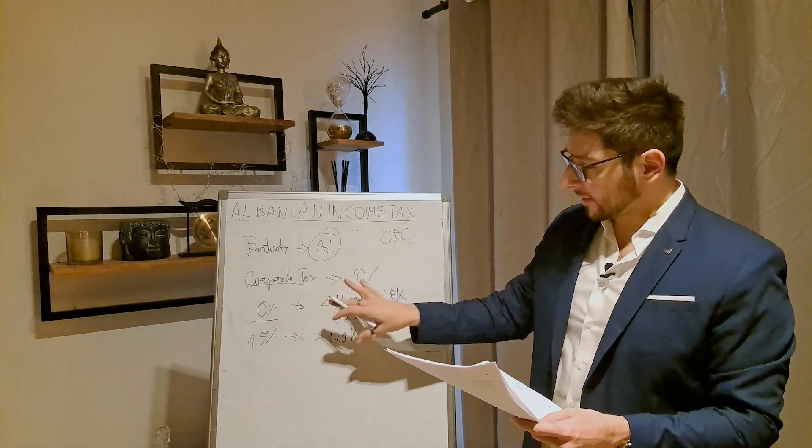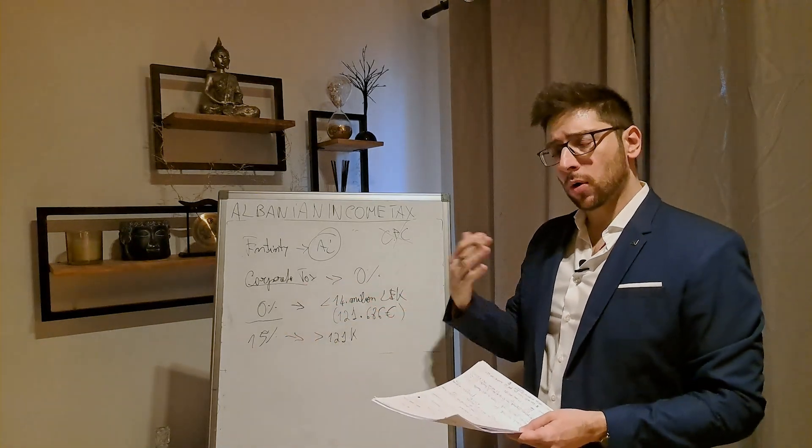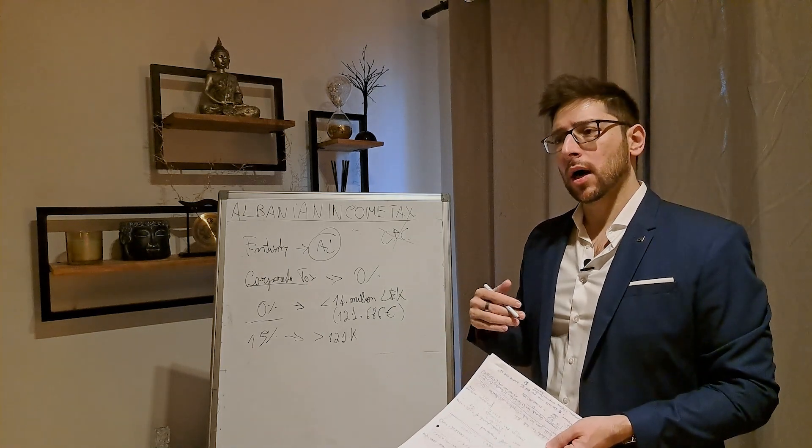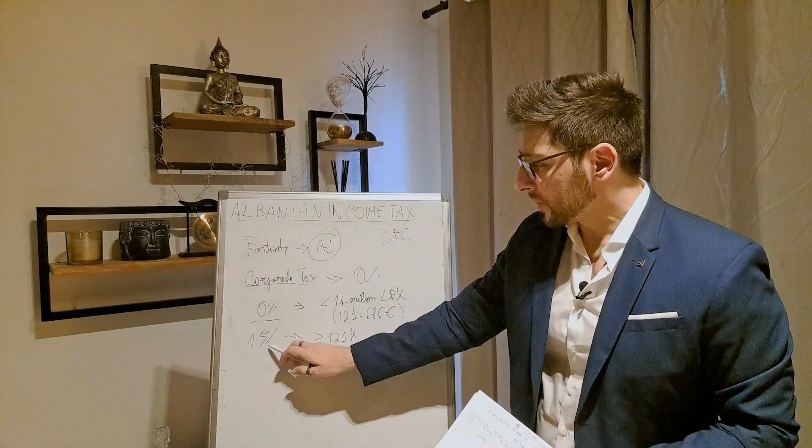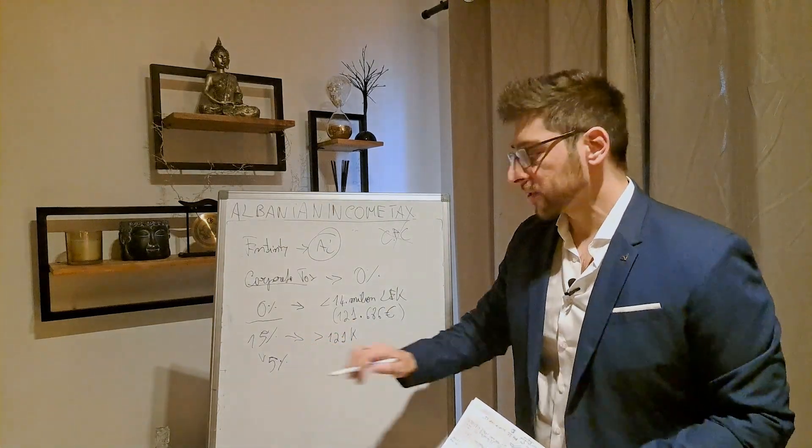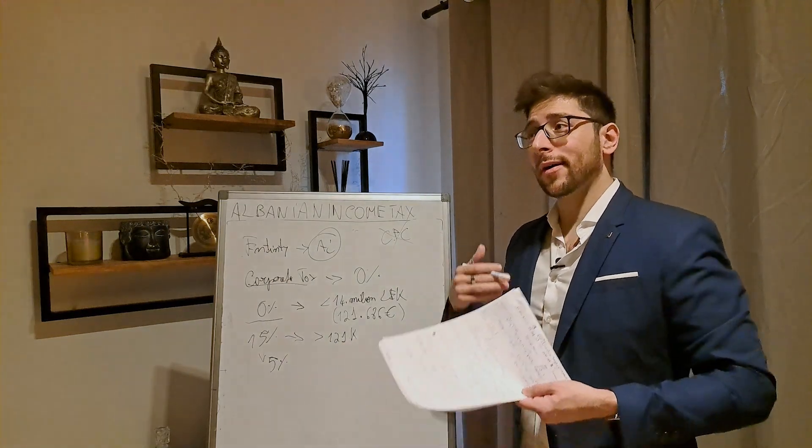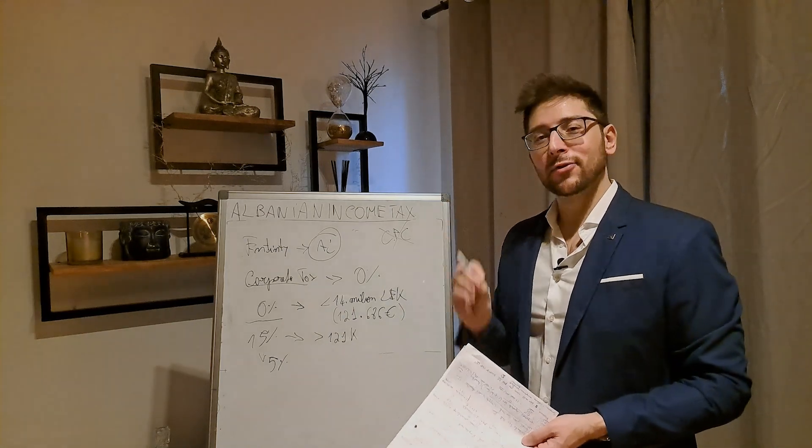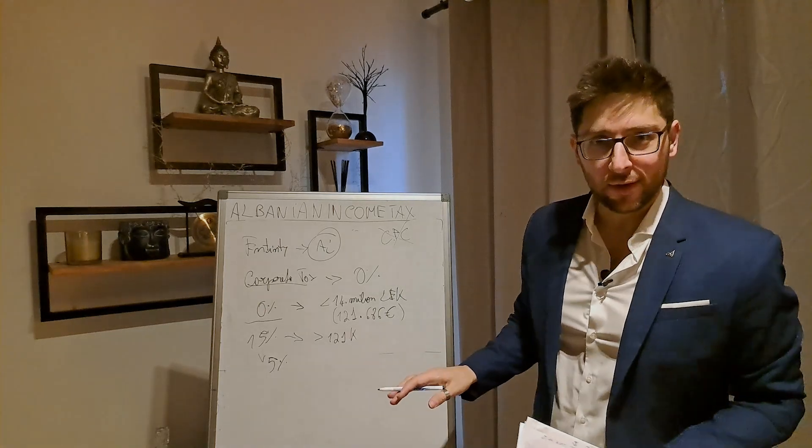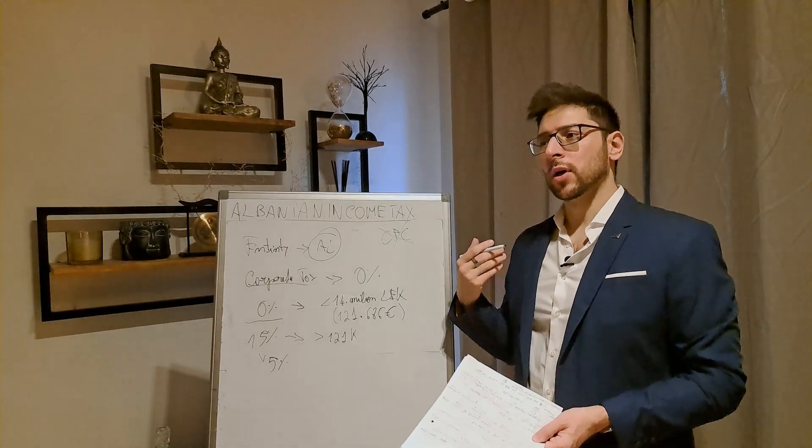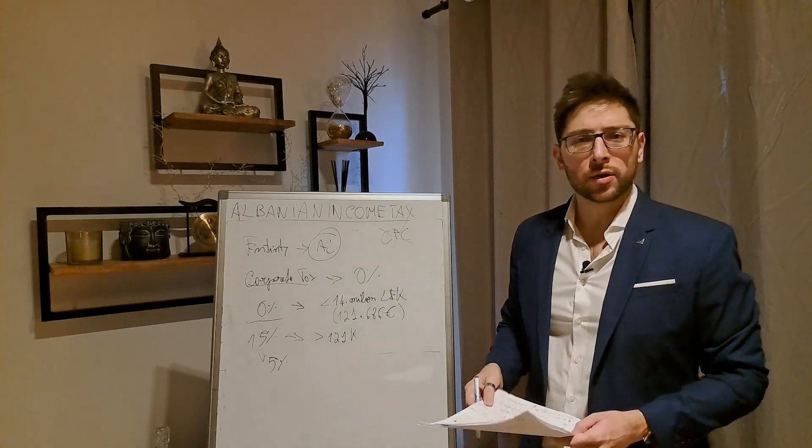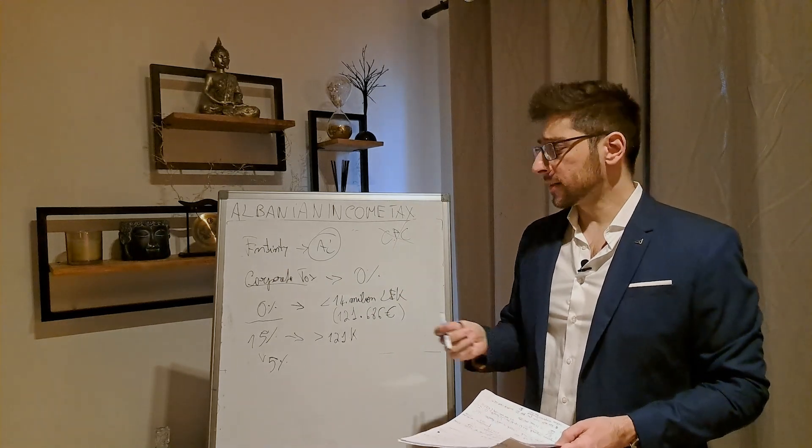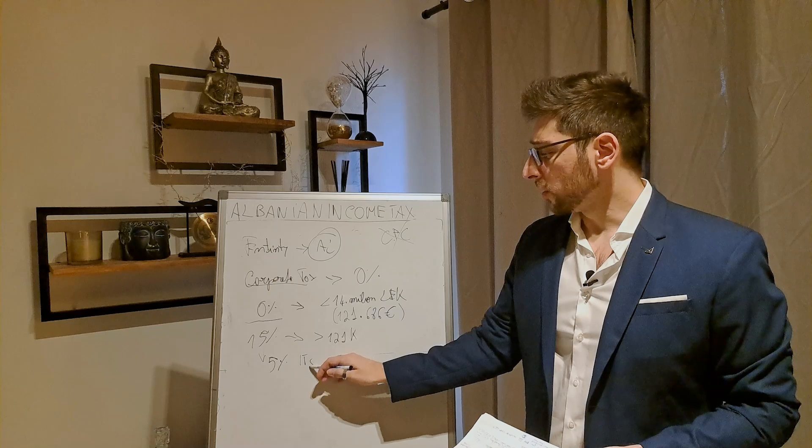And this system, this zero system works in general level, but there are also other kinds of companies in the sector of software development, automation, where the 15% dropped to only 5%, okay? And if you build up a hotel, so a structure, a resort of five stars, this is specifically written in the law, the corporate tax is always zero. So you can see the Albanian government wants to push more and more foreign investors to invest in Albania through a resort to five-star hotels and also in the field of IT software development.